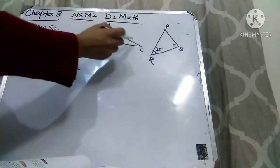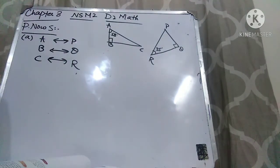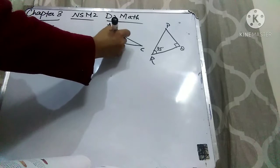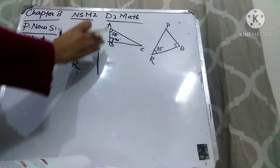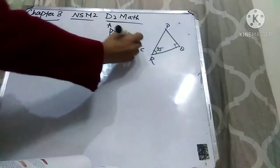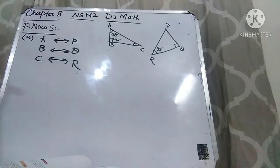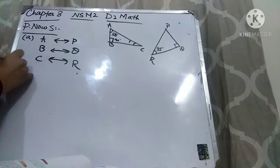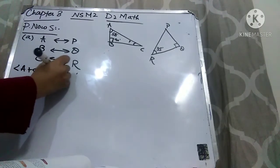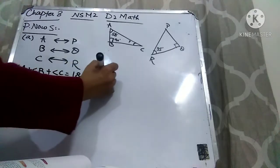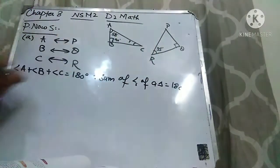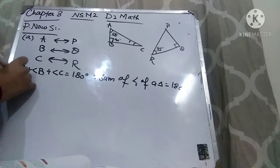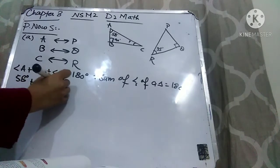So A is 58 degrees. Let's find out the missing angle — angle C is missing. The straight line means the angle here is 90 degrees; whenever there is a straight line, the angle is 90 degrees, a right angle. If we know two angles of a triangle, we can find the third angle using the property that the sum of angles of a triangle is equal to 180 degrees. So angle A plus angle B plus angle C equals 180 degrees. Angle A is 58 degrees, angle B is 90 degrees, and we have to find angle C.